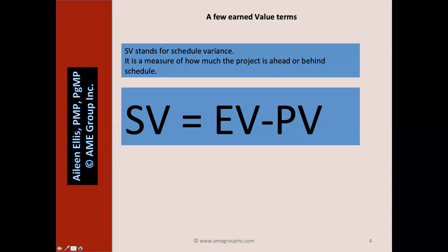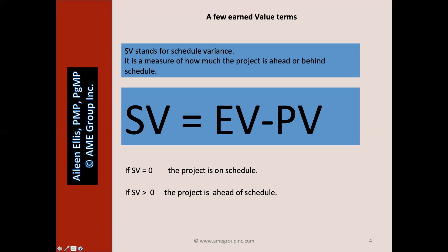SV stands for schedule variance. It is a measure of how much the project is ahead or behind schedule. The equation is: Schedule variance equals EV (earned value) minus PV (planned value). If schedule variance equals zero, there is no variance — the project is on schedule. If the schedule variance is a positive number, we are ahead of schedule; the work complete is greater than the work scheduled. If SV is less than zero, it means the project is behind schedule; the work complete is less than the work scheduled.